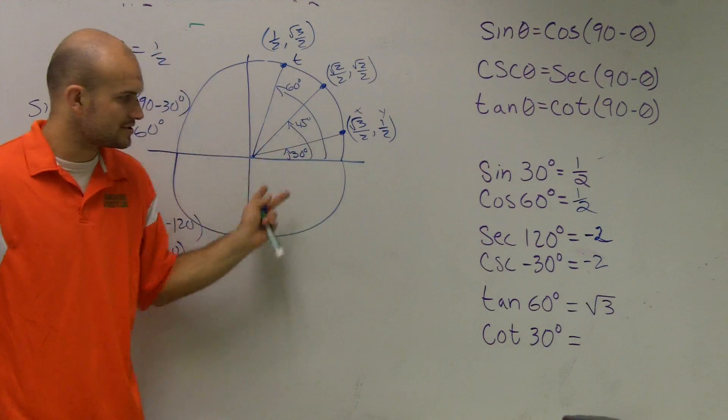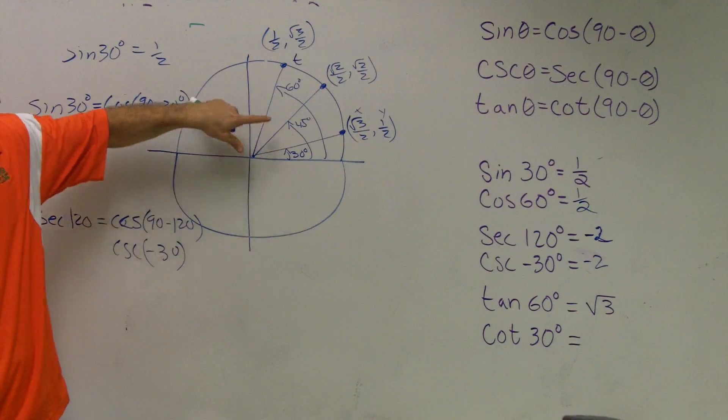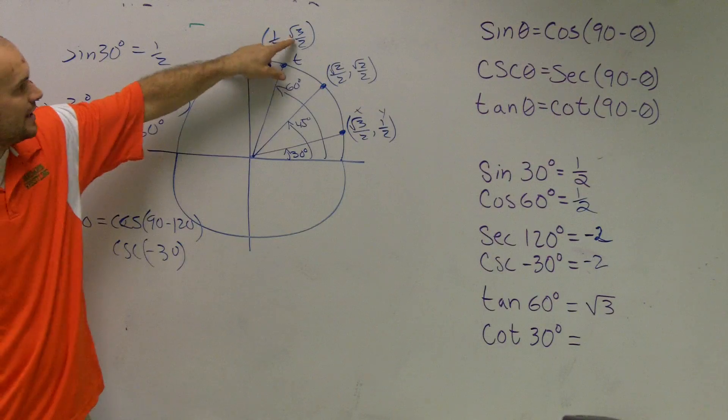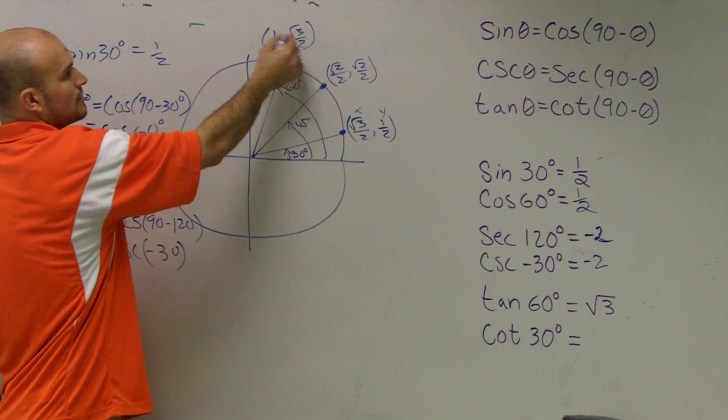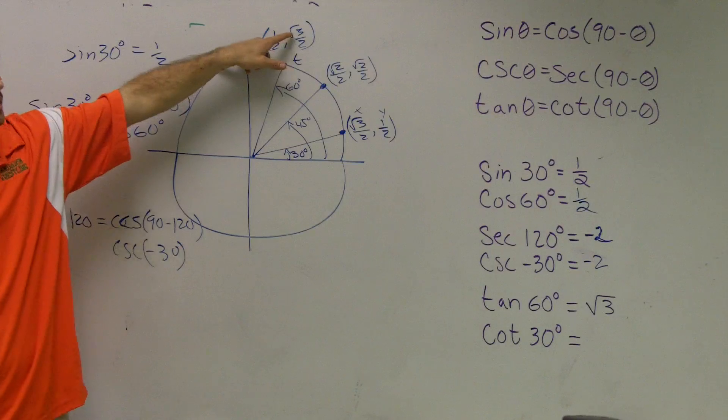This is not on this circle. But we can look at tangent of 60. Tangent of 60 degrees. I go over here. The tangent is radical 3 over 2 divided by 1 half, which, when they cancel out, equals square root of 3.